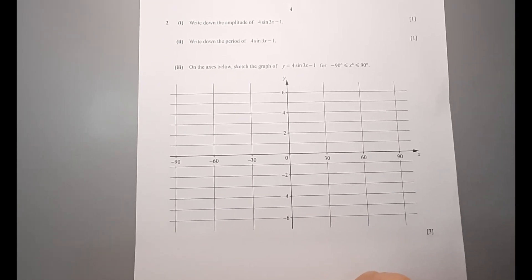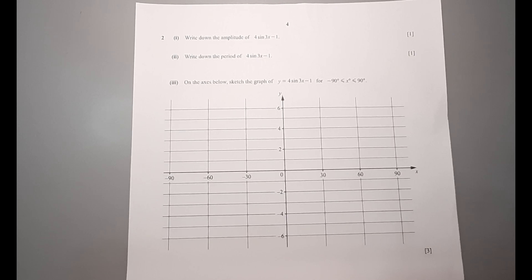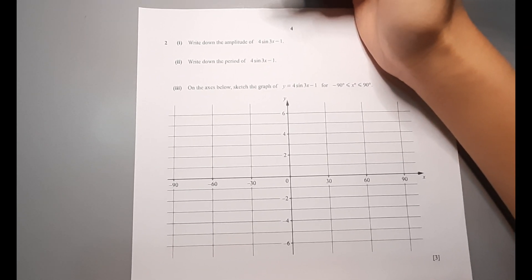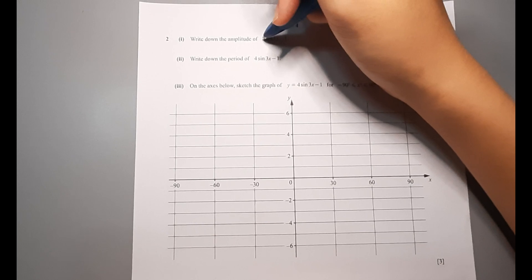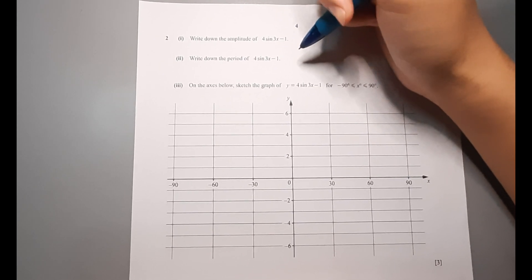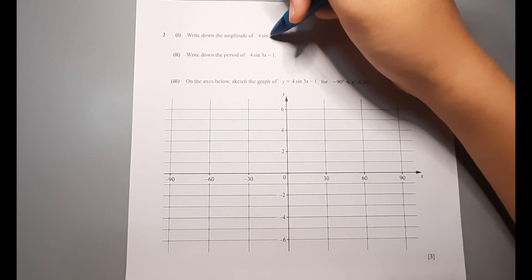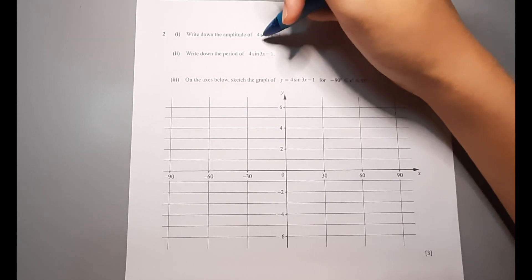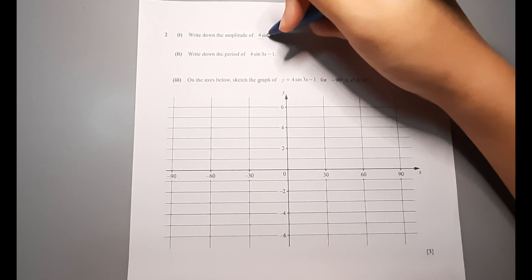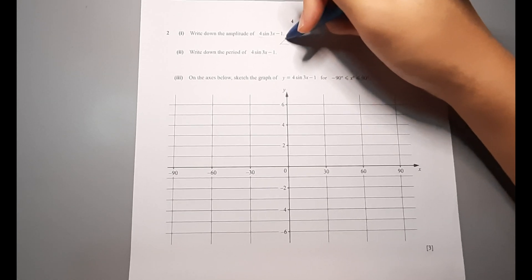Moving on to Question 2, part i: Write down the amplitude of 4 sin 3x minus 1. The amplitude is the number in front of the trigonometric function. In this case it is 4, because it is in front of sin 3x. So the answer is 4.